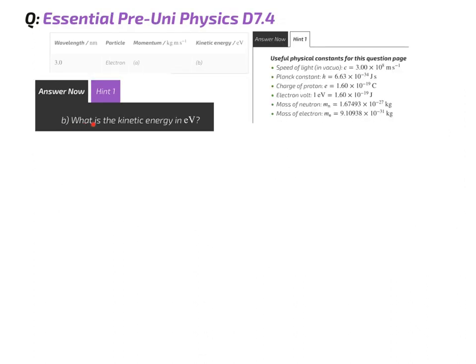For part B now, we have to work out the kinetic energy in electron volts of the electron. So, using the kinetic energy equation, we've got kinetic energy equals a half mv squared. So, to work out kinetic energy, which will be in joules, we need to know the mass of the electron and the velocity of the electron. We know the mass of the electron, it's given to us there, it's one that's in our formula booklets as well, but we don't know the velocity of the electron.